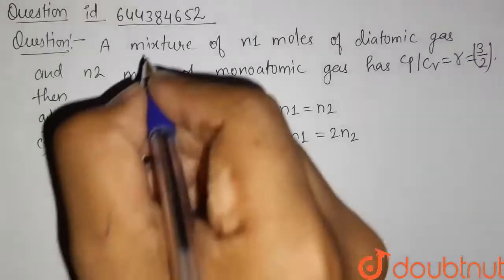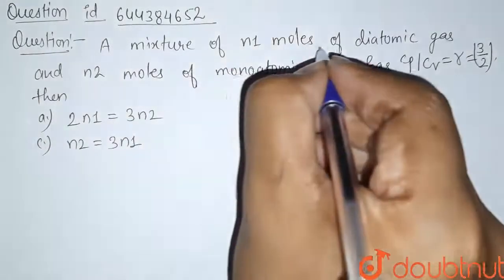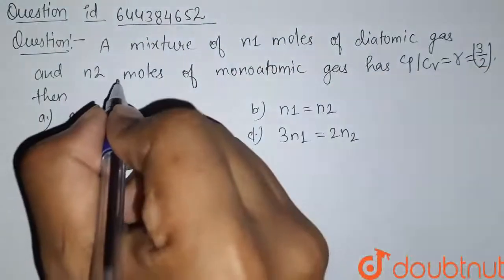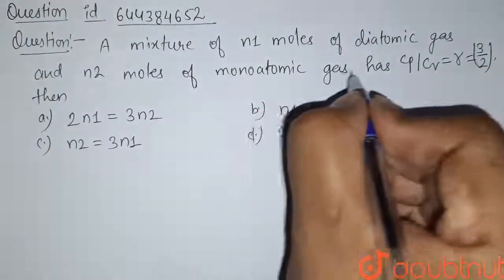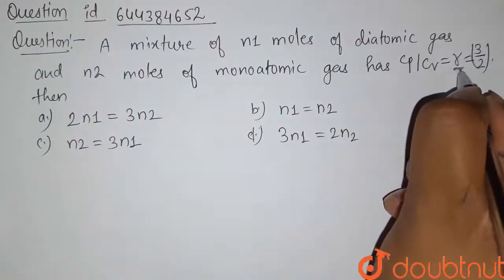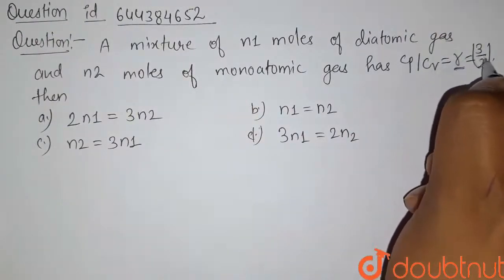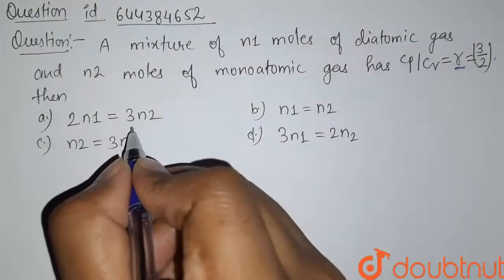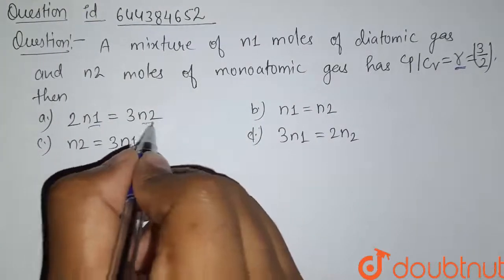Hello students, here's our question. A mixture of N1 moles of diatomic gas and N2 moles of monoatomic gas has Cp/Cv, that is gamma, equals 3/2. Then we have to relate N1 and N2.